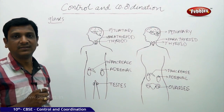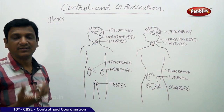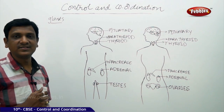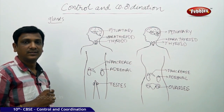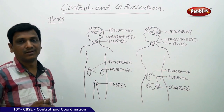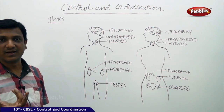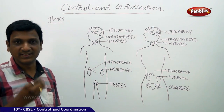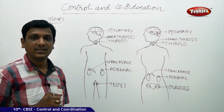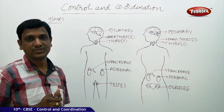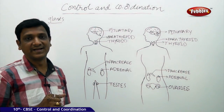Salivary glands secrete saliva. Lacrimal glands secrete tears. Different glands secrete different substances. But not all glands secrete hormones. Salivary glands are different — they secrete only saliva. There are some glands in our body which secrete hormones; those glands are called endocrine glands or ductless glands.